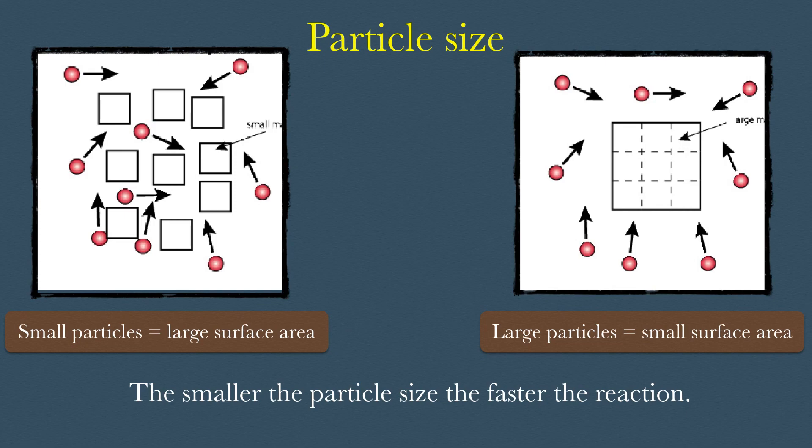The smaller the particle size, the faster the rate of reaction. This is because smaller particles have a larger surface area. This is why reactions occur much faster for powders compared to chips.